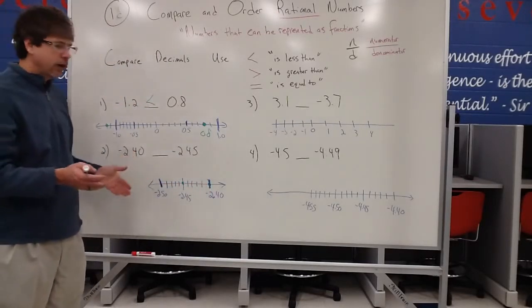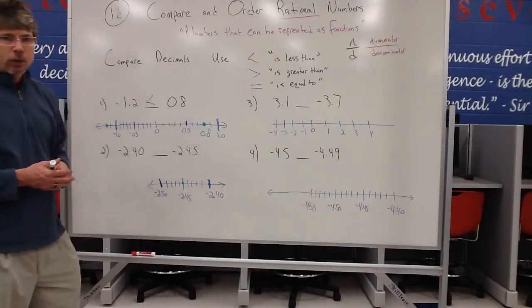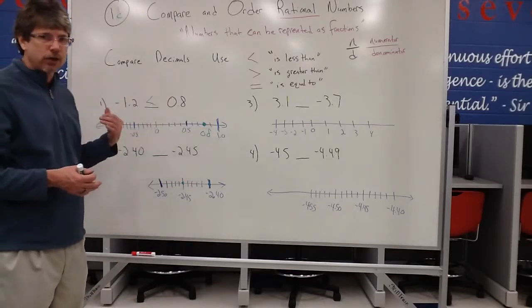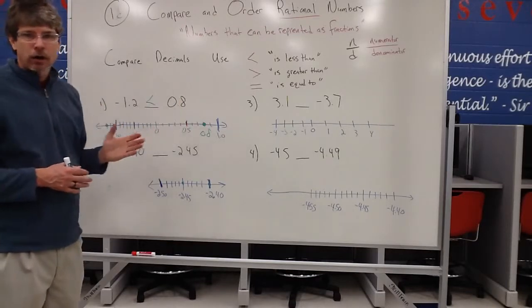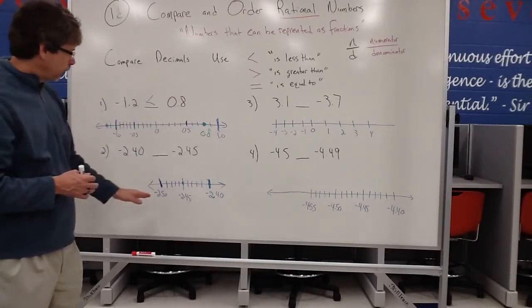So notice that these are both on the negative side of the number line. And what we learned is the more left you are, the less value you have. The more right you are, the more value you have. So in this case,